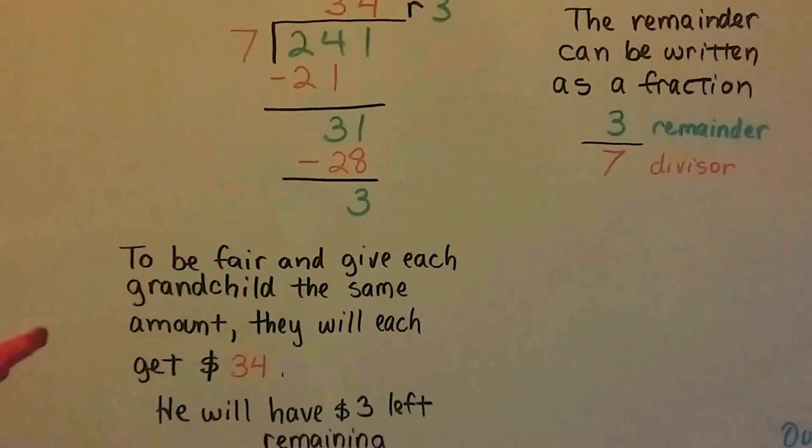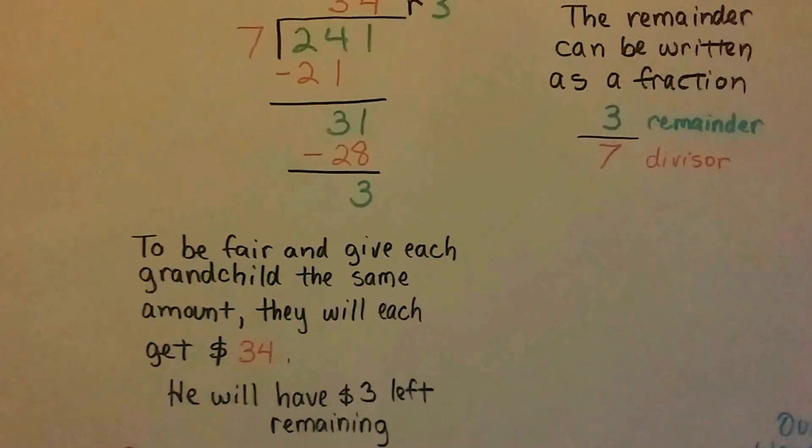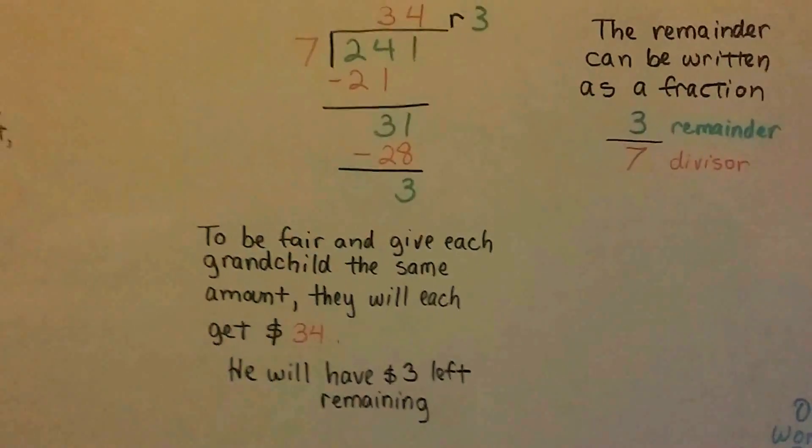So to be fair and give each grandchild the same amount, they'll each get $34, won't they? And he'll have $3 remaining.